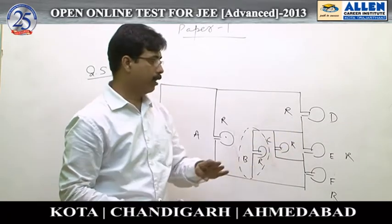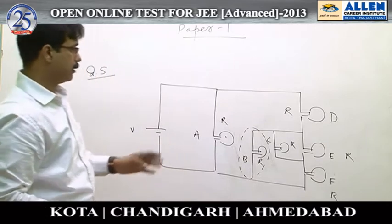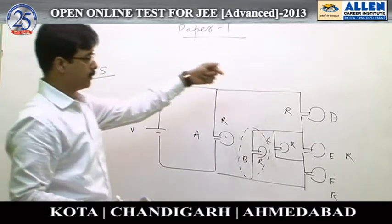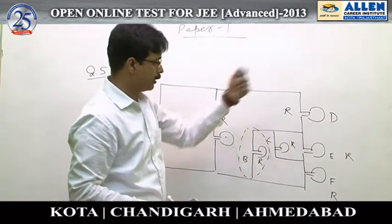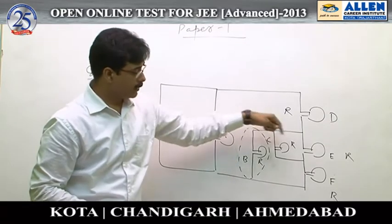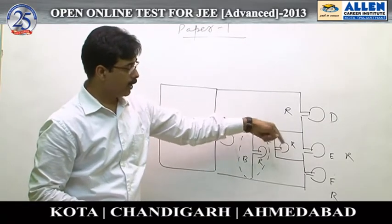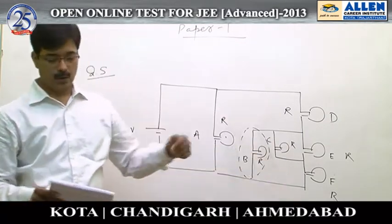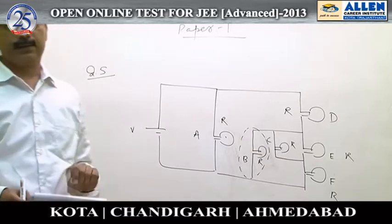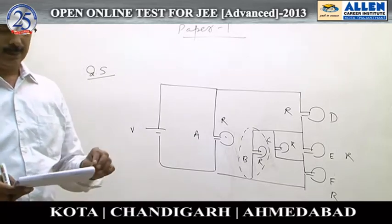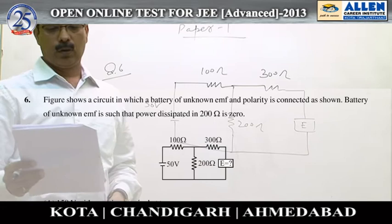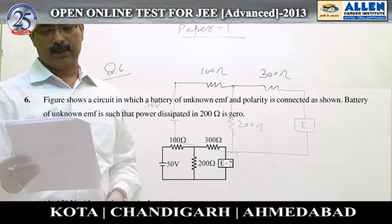Now you can write your answer. A is brightest, next comes D, then comes B, and E and C are equal but less than F. So your answer is option C.